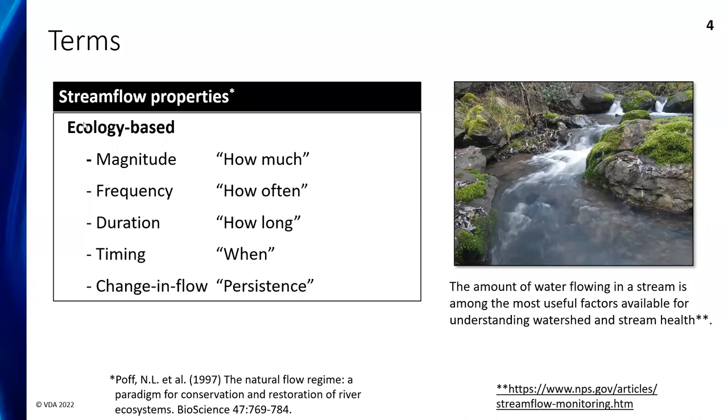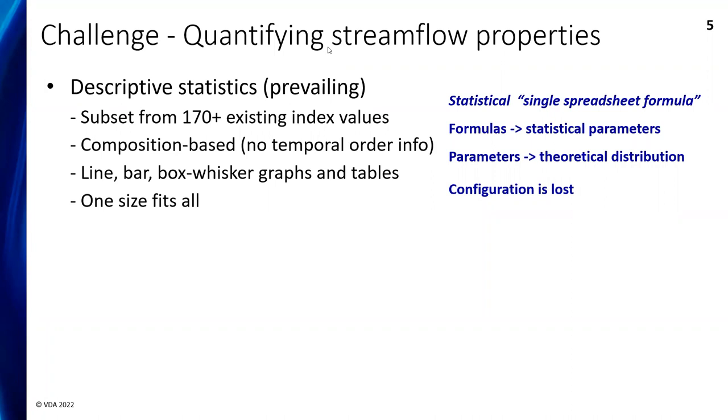When I talk about streamflow properties, a lot of it is ecology-based. The five main topics are: magnitude, which is how much; frequency is how often; duration is how long; timing is when; and change in flow is the persistence or the randomness of the flow. Here's the challenge. We want to quantify these streamflow properties. The prevailing technique, as it is right now, uses descriptive statistics. This is usually a subset from over 170 existing index values. Most of these are composition-based, and what I mean by that is there's no temporal order in the information. It's like finding the mean of a set of values - you can reorder those values and the mean will remain the same.